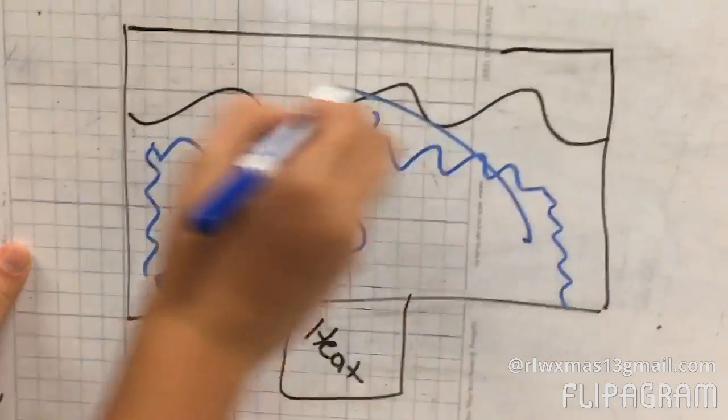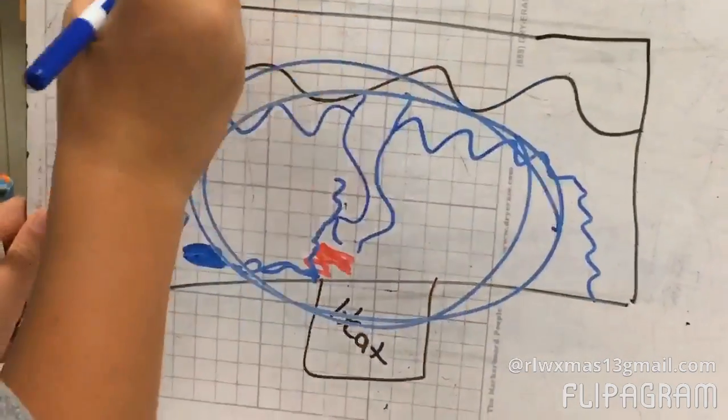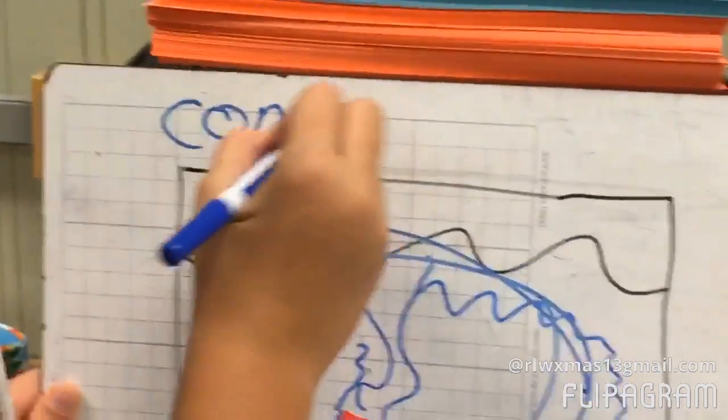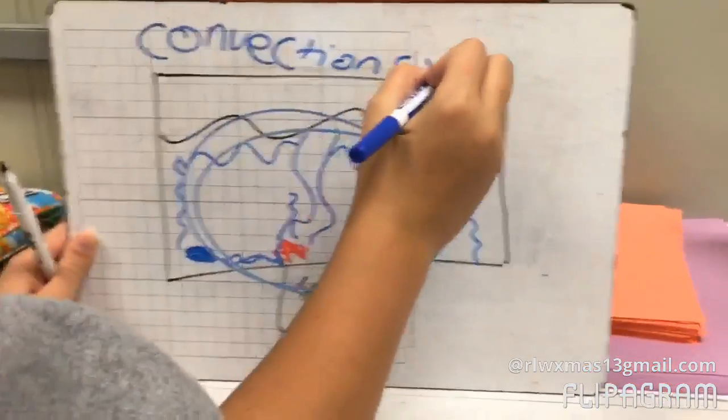And then it does this forever. So that's colder and that's colder, convection current.